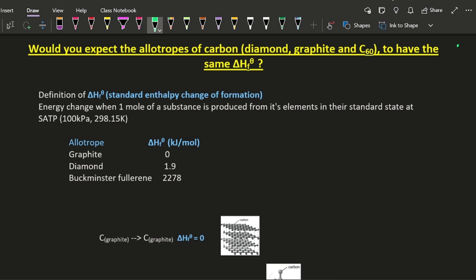Well, so don't forget, allotropes are different forms of the same element. That's the definition. And the definition of enthalpy change of formation is the enthalpy change when one mole of a substance is produced from its elements in their standard state at standard ambient temperature and pressure.